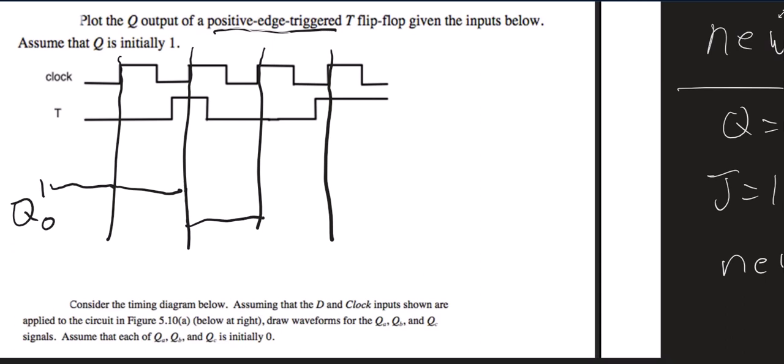And then I don't change until I get to the next edge of the clock. And at the next edge of the clock, T is 0, so no change. And at the next edge of the clock, T is 1 again, so I'm going to toggle, so this time I'll go from 0 to 1.